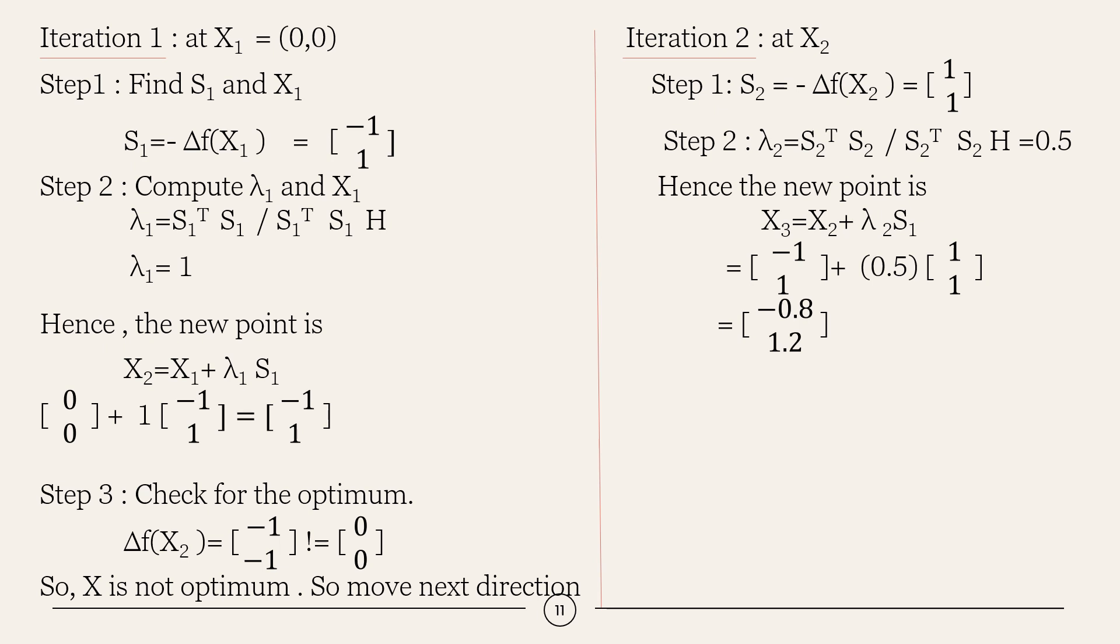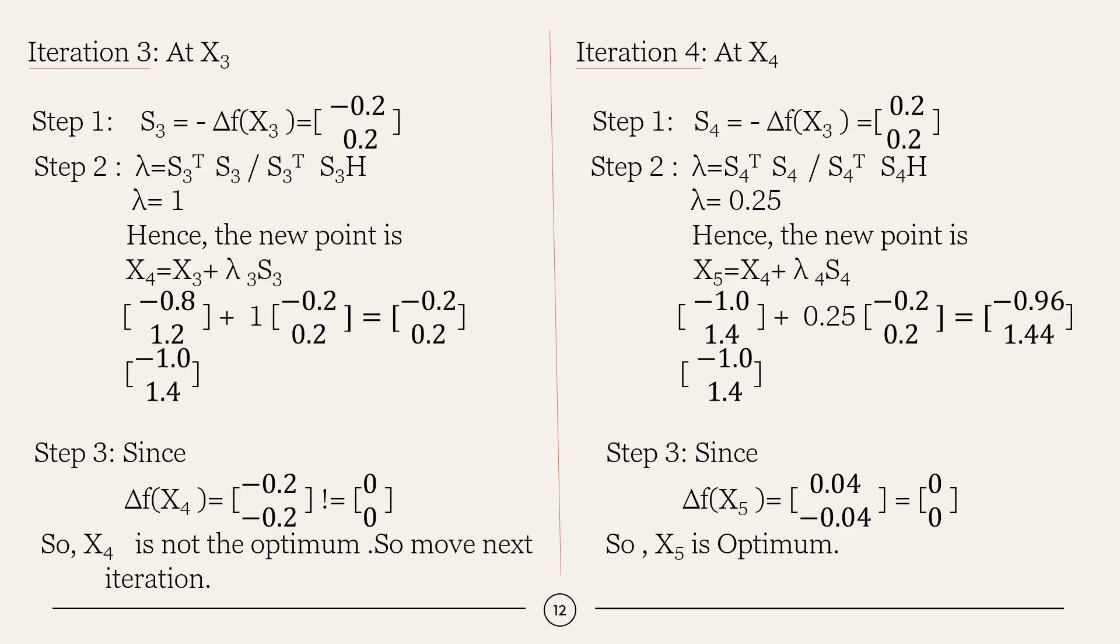In iteration 2, at x2, we have to calculate the search direction. S2 equal to minus gradient of f of x. So, we will be getting 1 comma 1 and we have to find the step length. By substituting these values, we will be getting the new point as minus 0.8 comma 1.2. And we have to further do this iteratively until we get the optimum value.